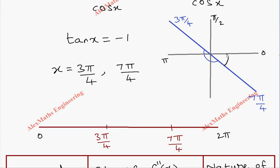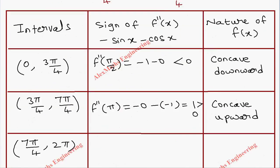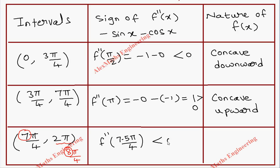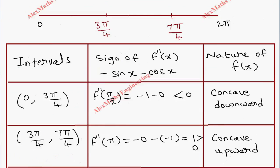For the third small interval between 7π/4 and 2π, we take a value such as 7.5π/4. Since 2π = 8π/4, we need a value between 7 and 8. Evaluating using a calculator, f'' is less than 0, so the function is concave downward in this interval.